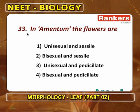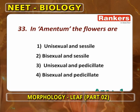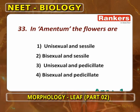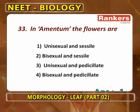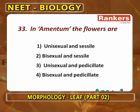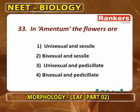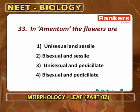In amentum (catkin), the flowers are unisexual and sessile. The basic difference between spadix and catkin: spadix is a straight inflorescence with unisexual or bisexual flowers; catkin is a weak drooping peduncle with unisexual sessile flowers. Amentum always shows unisexual sessile flowers.